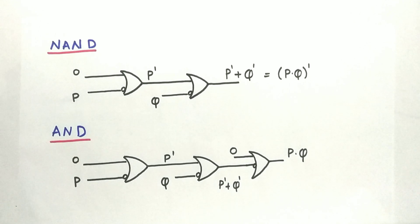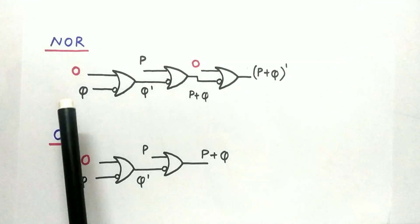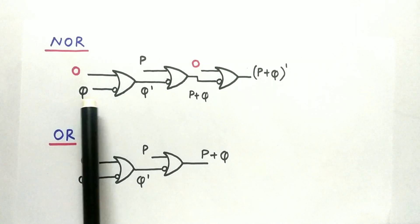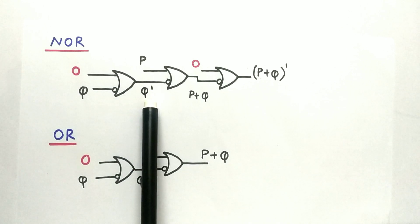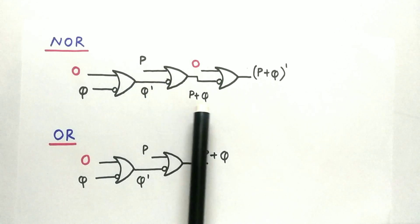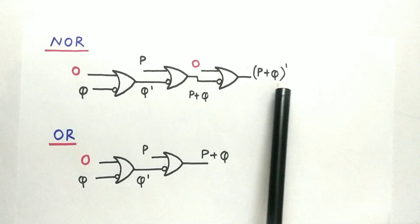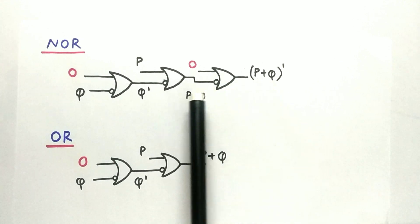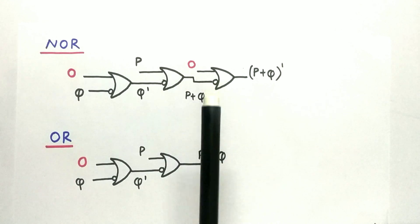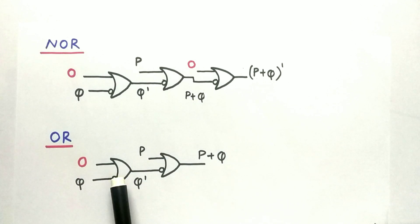Now let's look for NOR and OR operations. We use 0 as one input and Q at the implied gate input, getting Q complement. This is given to another implied gate with input P, giving P+Q. Passing P+Q through another implied gate gives us P+Q̄ — the NOR operation. This is achieved using three implied gates. The OR operation P+Q is achieved using just two implied gates.